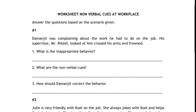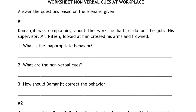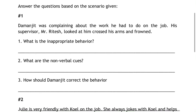Next is a worksheet: non-verbal cues at the workplace. Answer the questions based on the scenario given. Situation 1: Davanjit was complaining about the work he had to do on the job. His supervisor Mr. Rites looked at him, crossed his arms, and gave him a stern look. Questions: What is the inappropriate behavior? What are the non-verbal cues shown? And how should Davanjit correct his behavior?